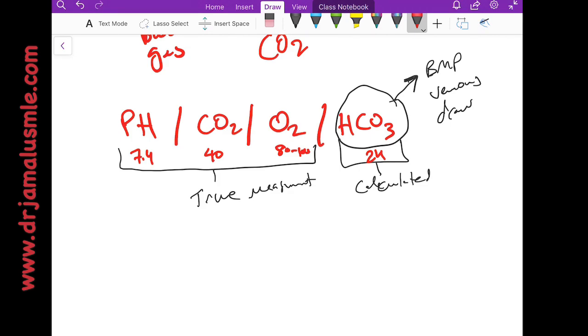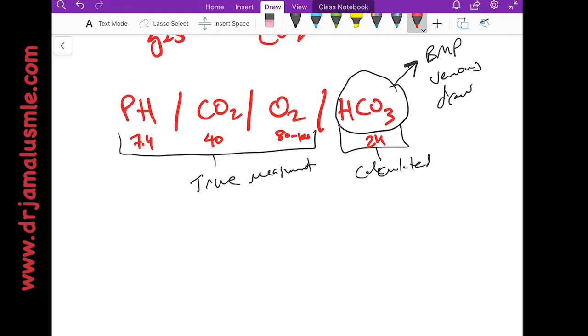Now in order for you to interpret ABGs, the first thing you ask yourself: pH, is it less than 7.4 or above 7.4?